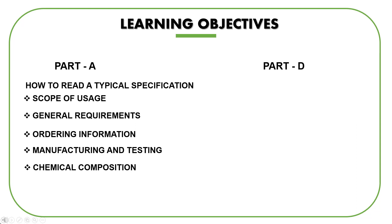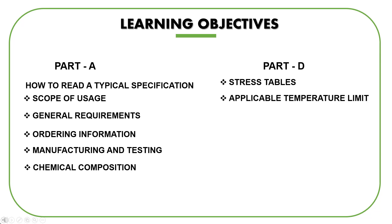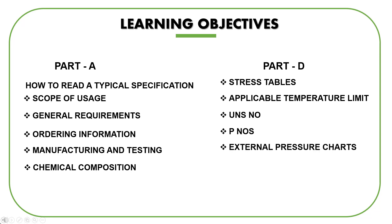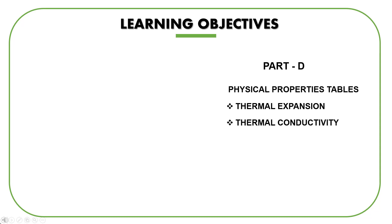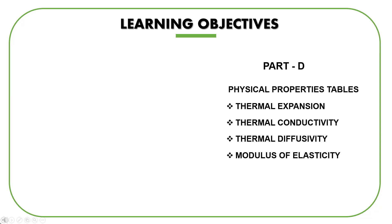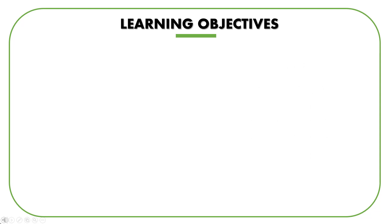In Part D, we'll learn about which stress tables to refer to for the applicable code, how to see the applicable temperature limit for a material, and how to find the UNS number, P numbers, and applicable external pressure charts. We'll also learn to find maximum allowable stresses, which is the most important part of thickness calculation. You'll also be exposed to physical properties tables covering thermal expansion, thermal conductivity, thermal diffusivity, and modulus of elasticity. You'll also get a brief overview of charts and tables useful for thickness calculations for external pressure, which will be covered in greater detail in the module on Section 8, Division 1.